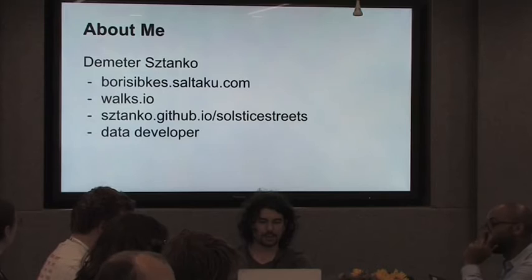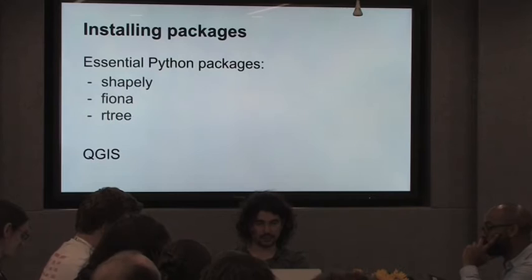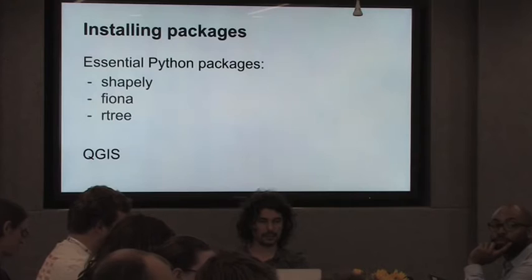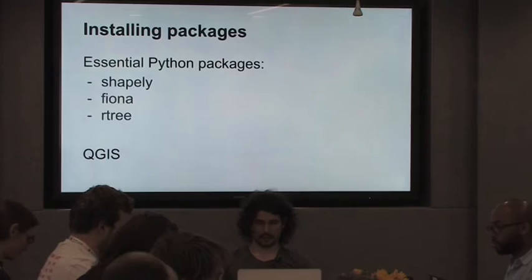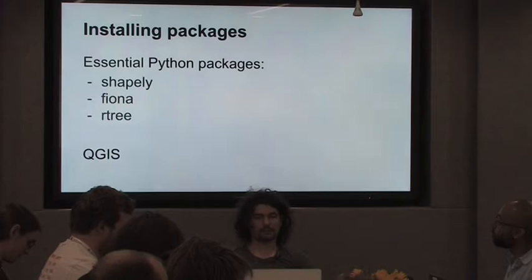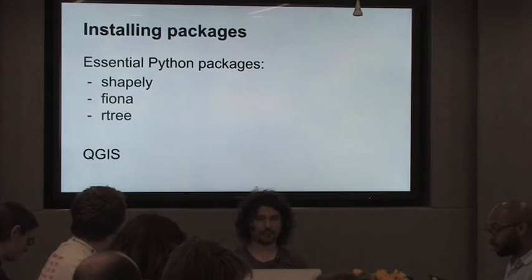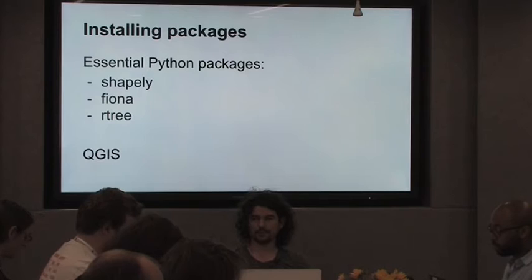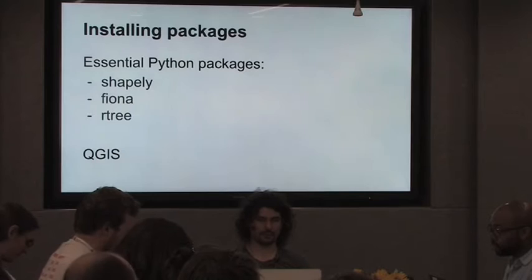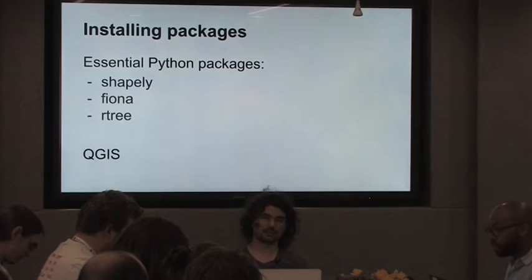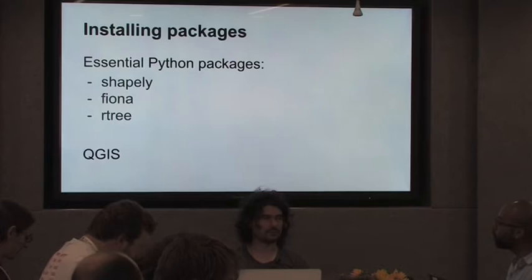If you have Python installed and can install these three packages, at least the first one, that will be great — it will cover about 80% of this tutorial. Fiona is a nice package as well. Artery is not mandatory, so it's not a blocker. QGIS is a toolkit for viewing stuff, and I highly encourage you to keep it. If you ever work with geodata, probably the first thing you will need is QGIS before you start any kind of analysis — it's really nice for viewing and analyzing different kinds of data.